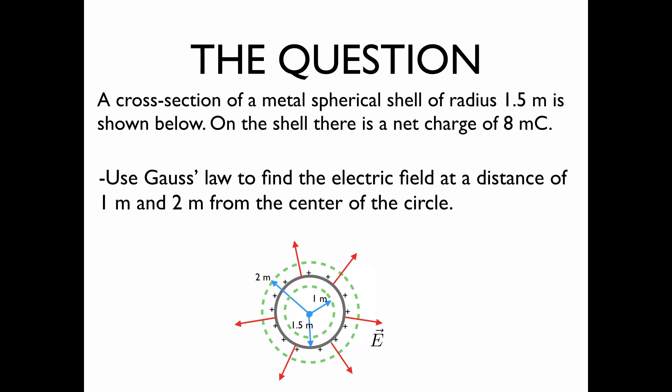I'd like to pause for a second to examine the illustration below. The gray circle is to illustrate the actual metal spherical shell on which the charge is placed. The inner green circle is to show the sphere at 1 meter at which we'd like to find the electric field.